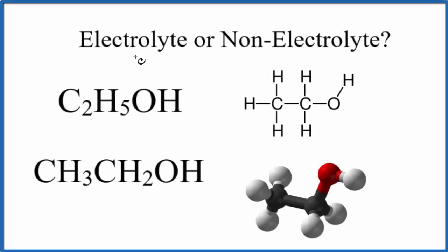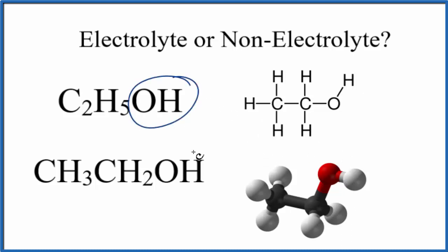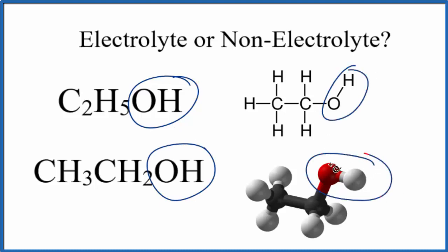So the question is whether ethanol is an electrolyte or a non-electrolyte. Ethanol is often written as C2H5OH, although sometimes you'll see it as CH3CH2OH — they're the same thing, just a little bit expanded. We could also draw the structural formula or look at a molecular model. What makes it ethanol is this OH group right here — this is what makes it an alcohol.